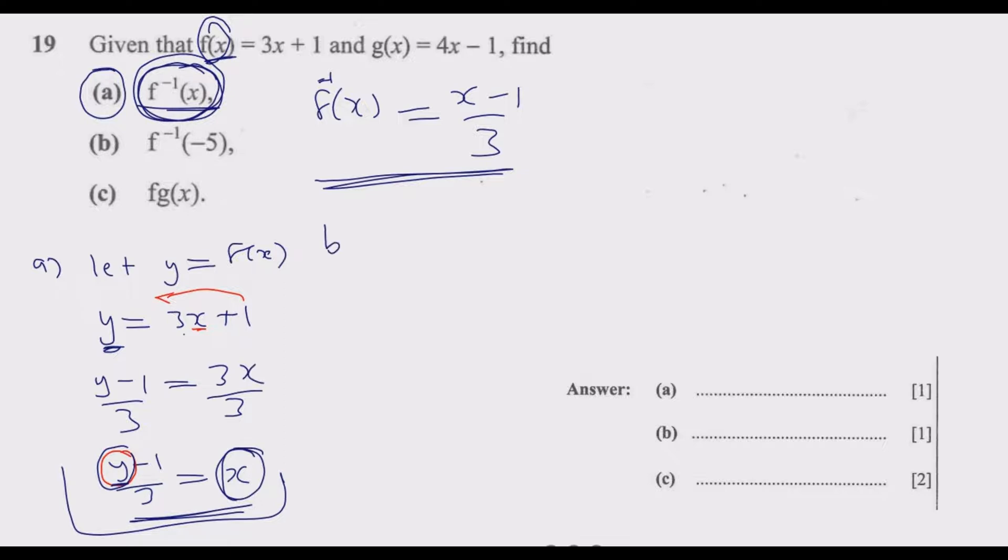Then we go to part b. We are trying to find the value of this function when x equals negative 5. So f⁻¹(-5) = (-5 - 1)/3. We get (-6)/3, which equals negative 2. So negative 2 is the answer.